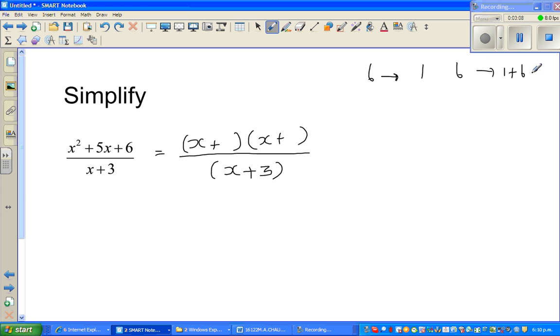So that will not be sufficient because we want 5 in the middle. If you write 6 as 2 times 3, 2 times 3 is 6, and 2 plus 3 is 5. So the factors would be (x plus 2)(x plus 3). Just like that, and then you can cancel this (x plus 3) and (x plus 3). So what remains is x plus 2.